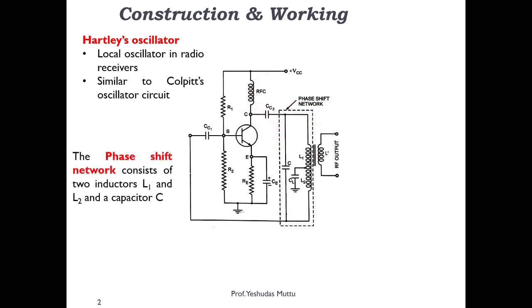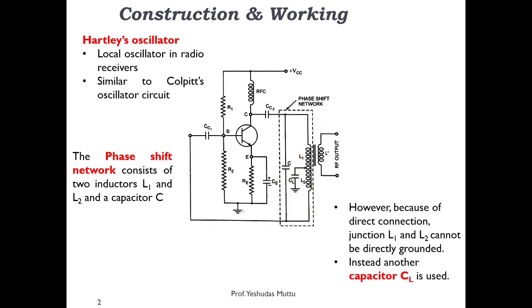In the phase shift network, there is an inductor which we term as a split inductor — split into two parts: L1 and L2 — and there is a capacitor C. Since a split inductor is being used, we have to ground it. We cannot ground it directly, so a capacitor CL is used. CL acts as a bypass or decoupling capacitor, which bypasses noise directly to ground.